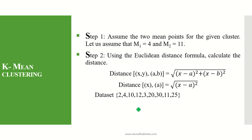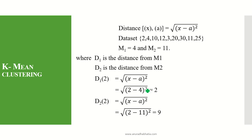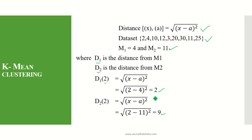The data set is given to us. We calculate the distance for the data set using the formula. D1 is the distance from the first mean and D2 is the distance from the second mean. So D1 for the first item set 2 is the square root of (2 minus 4) squared, which is square root of 4, giving 2. And D2 is square root of (2 minus 11) squared, which is 9.